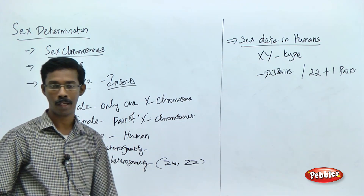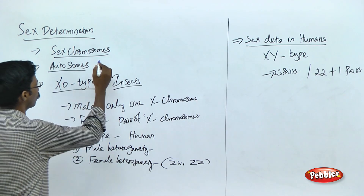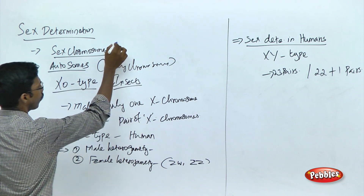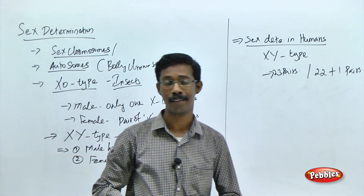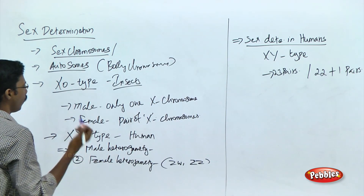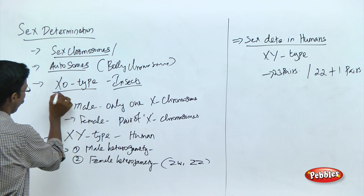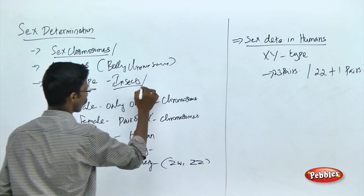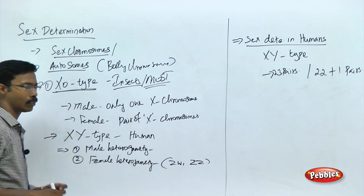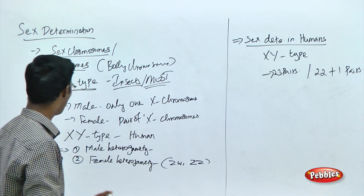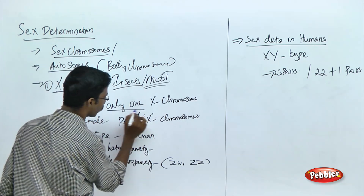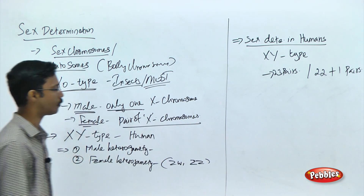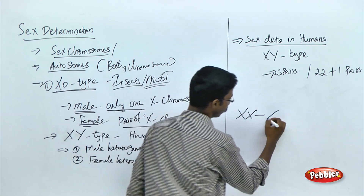Any chromosome apart from the sex chromosomes is called an autosome or body chromosome. The remaining chromosomes that determine the sex of a particular individual are called sex chromosomes. The first example is the XO type. Most insects carry the XO type of sex determination. In this type, the male insect carries only one X chromosome and the female carries a pair of X chromosomes. That is why we call it XO or X0.